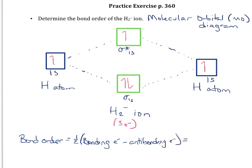In this case, you should be able to see that we have two bonding electrons. We have one anti-bonding or non-bonding electron. So two minus one is one. One-half of that is going to be one-half.